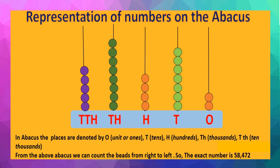Now count the beads of the hundreds place spike: one, two, three, four. So it consists of four beads.